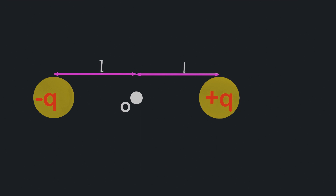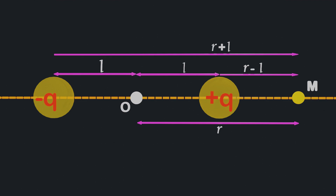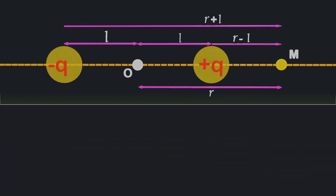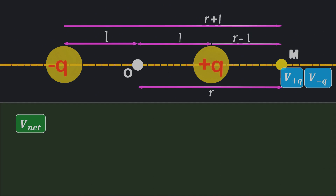Suppose we want to calculate the electric potential due to a dipole at point M, which is positioned axially at distance R from the center of the dipole. Point M is at distance R minus L from the positive charge and R plus L from the negative charge. We need to calculate the net potential at point M due to both charges. For the positive charge, the electric potential is V positive Q, and for the negative charge it is V negative Q. Since potential is a scalar quantity, the net electric potential at point M is V net equals V positive Q plus V negative Q.